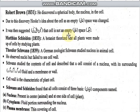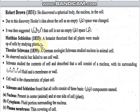It was then suggested that the cell is not an empty space. Schleiden, by studying plants, concluded that all plants are made up of cells.